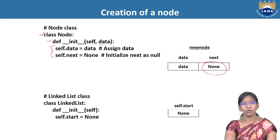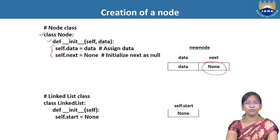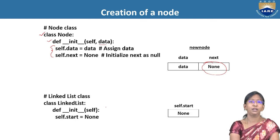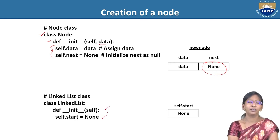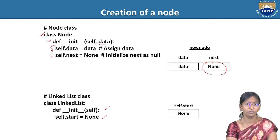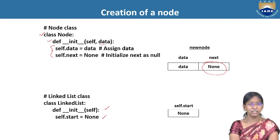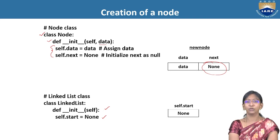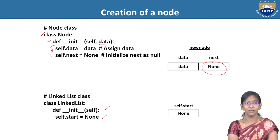All the remaining concepts will be in the class LinkedList, whose constructor has only the start pointer — which holds the address of the first node. Initially there is no linked list created, so start is initialized with None.